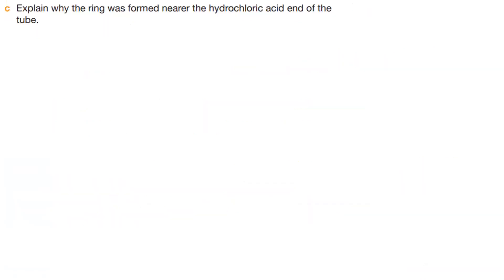Question C. Explain why the ring was formed near the hydrochloric acid end of the tube. Because HCl particles or molecules are heavier than NH3 particles, NH3 particles will cover more distance in less time and they can get diffused together nearer to the hydrochloric acid end.